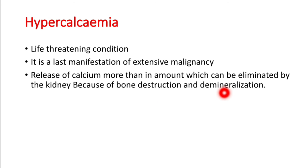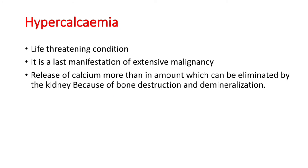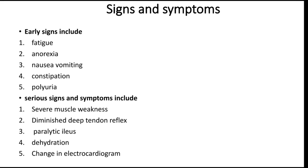Various hormones like parathyroid hormone and prostaglandins, or osteoclast-like substances, can be released by the tumor, causing bone demineralization — calcium is removed from the bone and passed into the blood, leading to hypercalcemia. Other contributing reasons include excessive use of vitamins and minerals, dehydration, hyperparathyroidism, renal impairment, and use of diuretics.